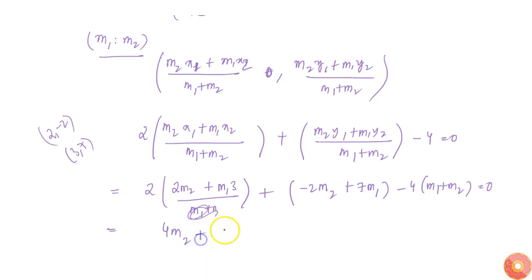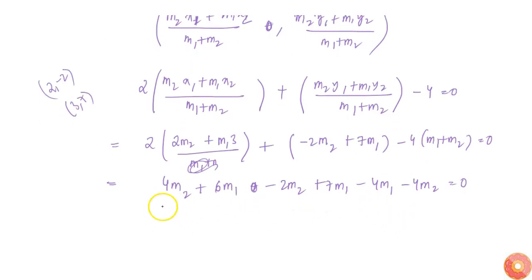From this I'll get 4m2 + 6m1 - 2m2 + 7m1 - 4m1 - 4m2 = 0.